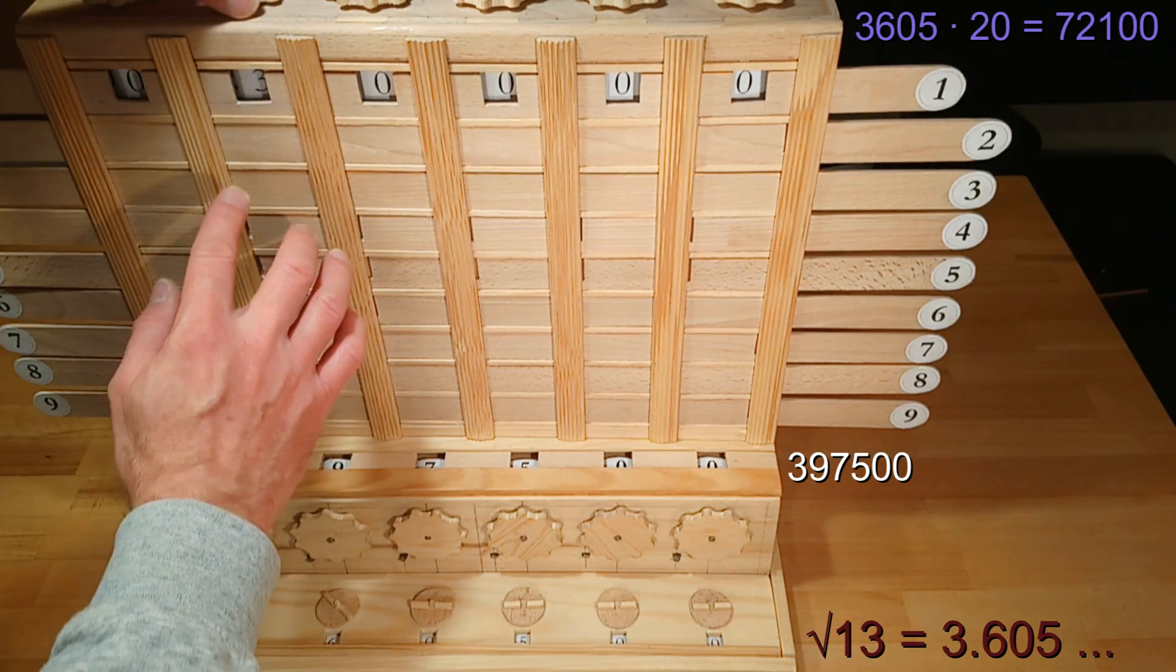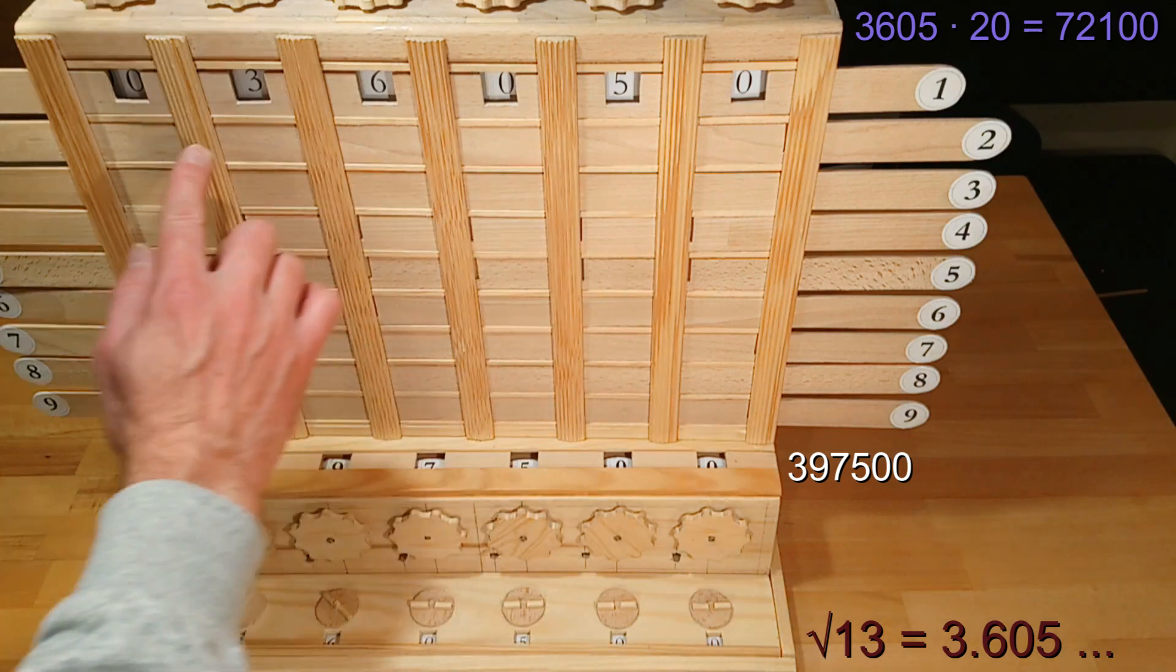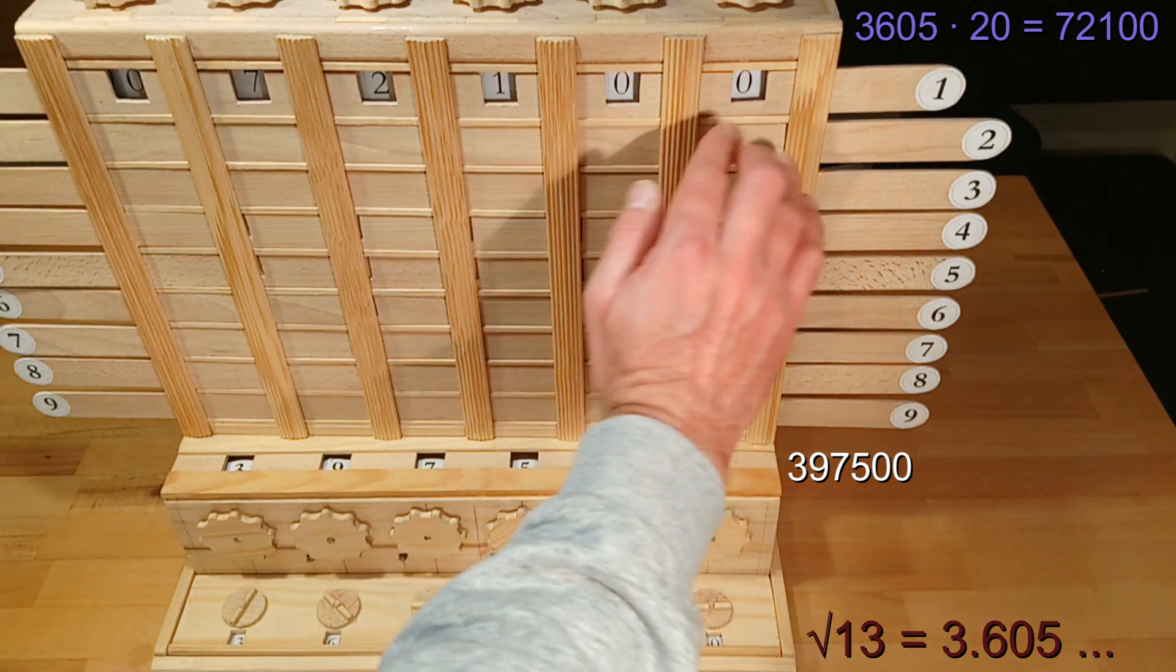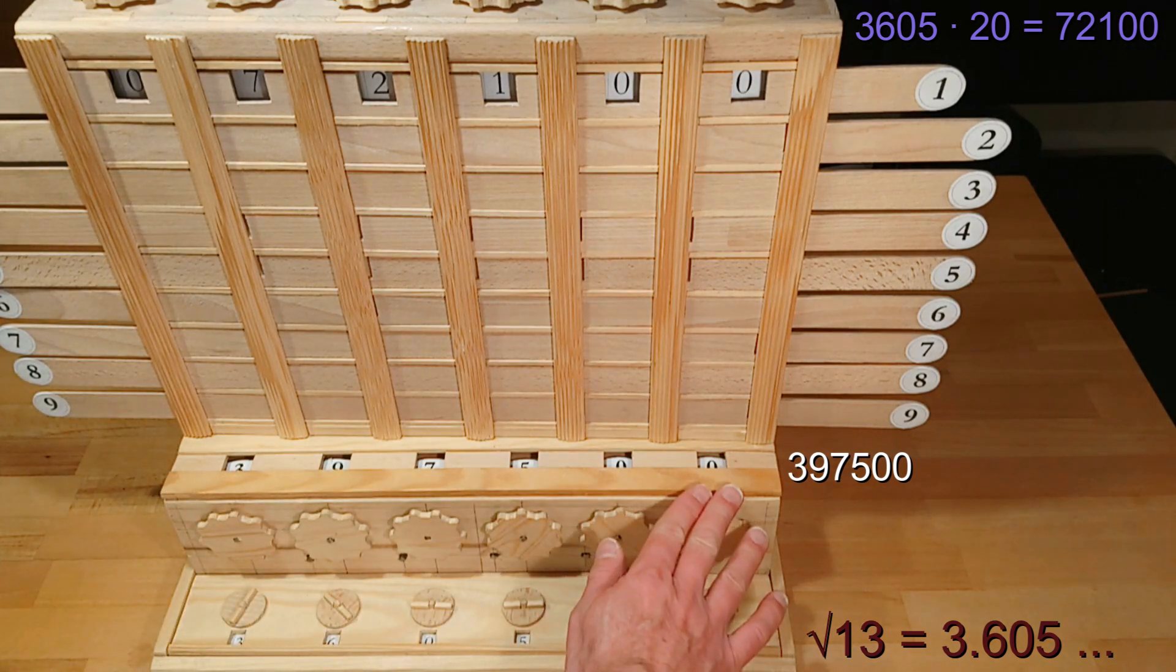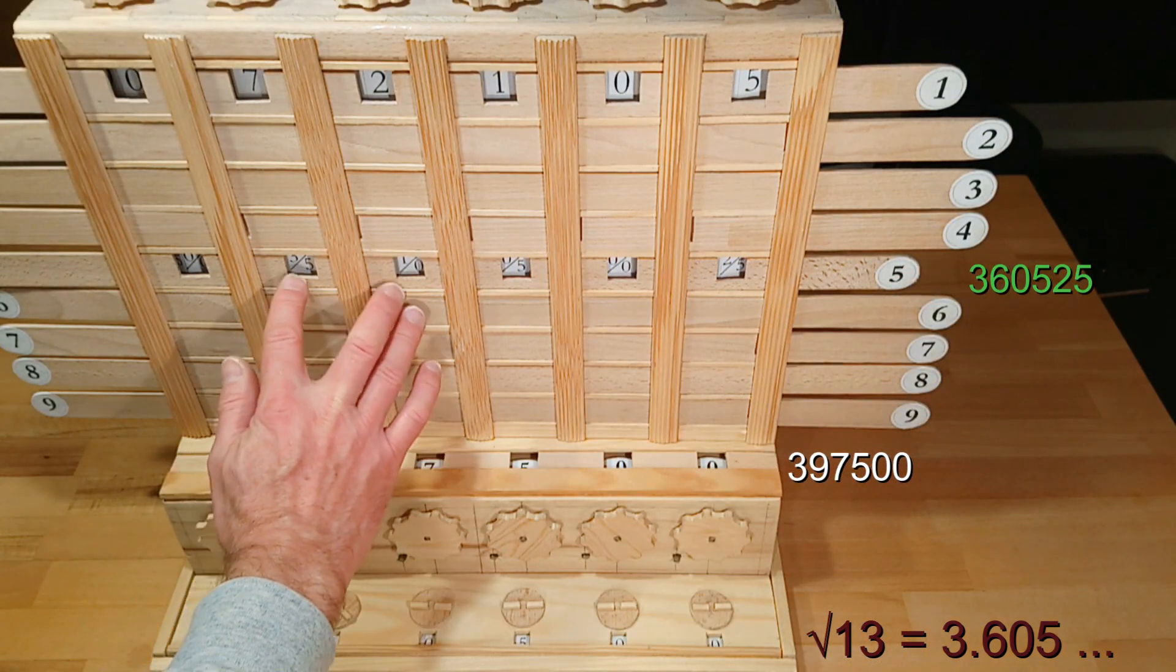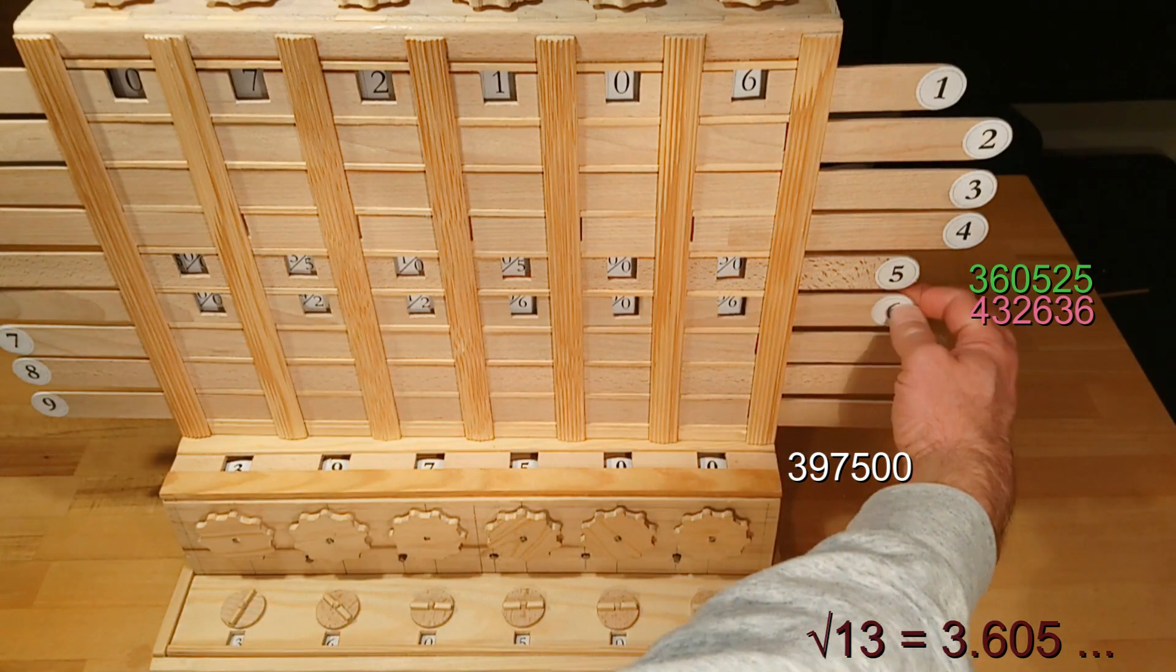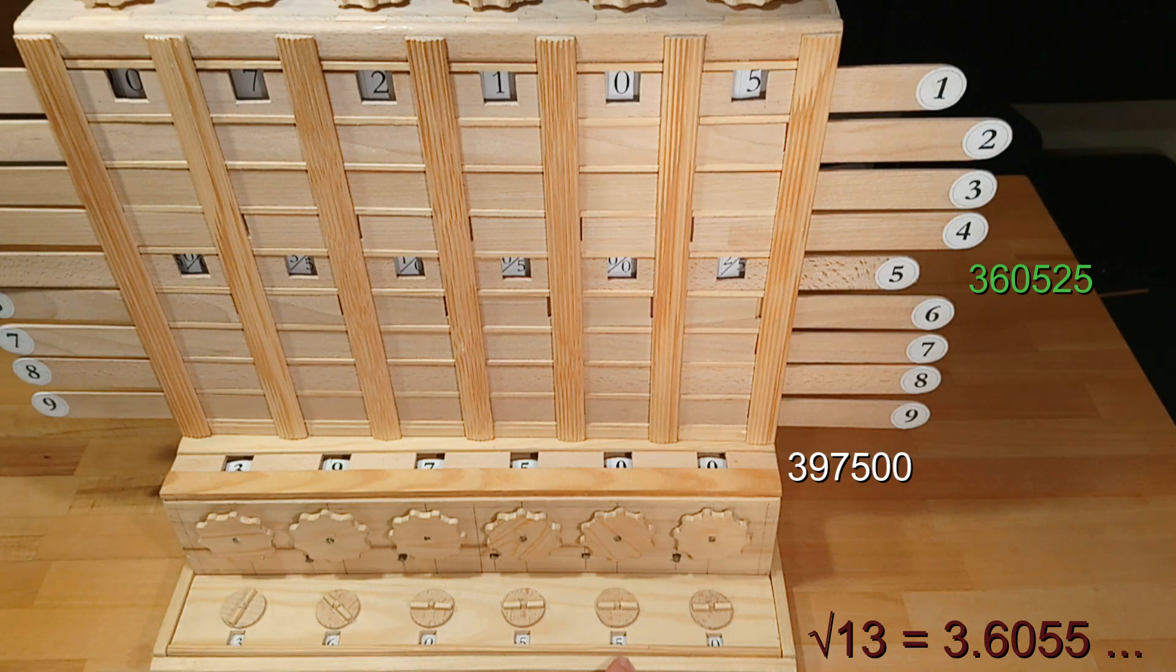Then we have to enter the 3.605 in the tenth column of the multiplier and multiply it by 2. That's 72,100. And now we are looking for the number 72,100 plus x multiplied by x that is less or equal 397,500. Let's try the 5 again. That would be 360,525. That's okay. The 6 would be over 400,000. That's too large. Therefore 5 is the next result digit. I'll transfer it. And now we have 3.6055 found so far.